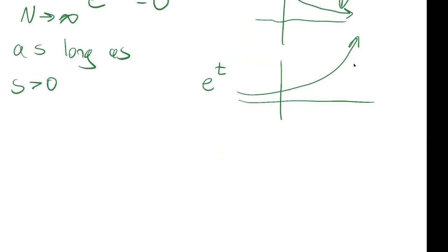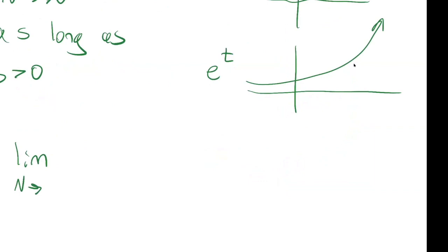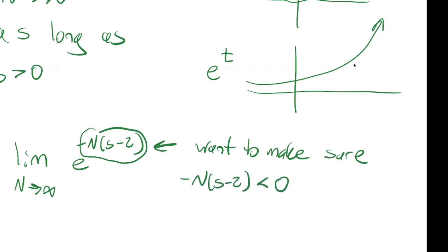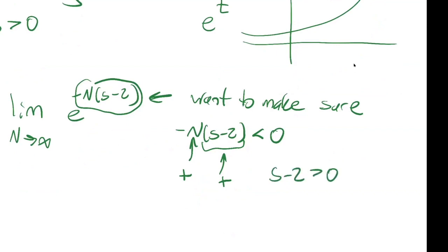There was a second problem that looked at a similar limit. The key is to make sure the power is negative or else it wouldn't converge. We know that the N part is positive, so if I want this product to be negative, I would want the other factor to also be positive — negative times positive times positive. So you'd want to check that S minus two is bigger than zero, meaning any value of S bigger than two would work.